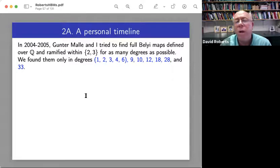So here's a personal timeline of how I got into this. So in 2004 and 2005, Gunter Malle, who I knew at that time only by email, and I tried to find full AN or SN Belyi maps defined over Q and ramified within two, three for as many degrees as possible.